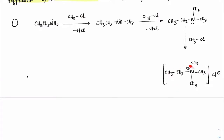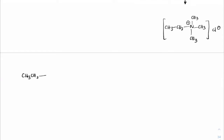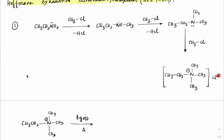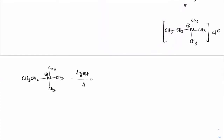Once we have the ammonium salt CH₃CH₂N⁺(CH₃)₃, we treat it with AgOH. Silver salts are used to ensure the halide doesn't re-attack — the halide precipitates as AgCl. The OH⁻ acts as a base, extracting the beta hydrogen, and the C–N bond breaks. We get CH₂=CH₂ plus N(CH₃)₃ plus H₂O.